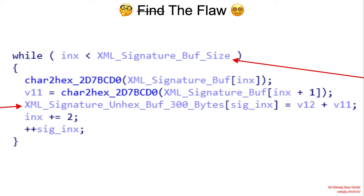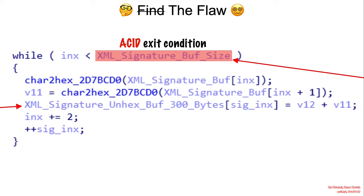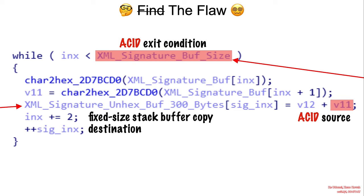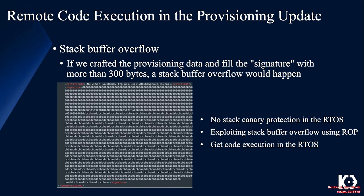Looking at the XML signature buffer size — that is the buffer that contains the unhexified data — we can clearly see that there will be an attacker-controlled input data exit condition. The variable V11, which will be read into the unhexed buffer, is also an attacker-controlled source. We have a fixed-size stack buffer as the copy destination. If we craft the provisioning data and fill the signature with more than 300 bytes, a basic standard stack buffer overflow would happen.